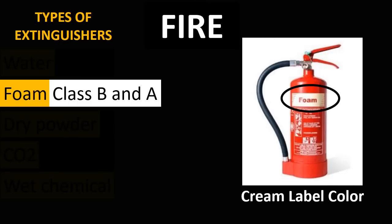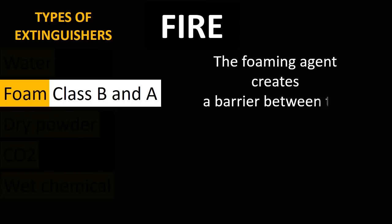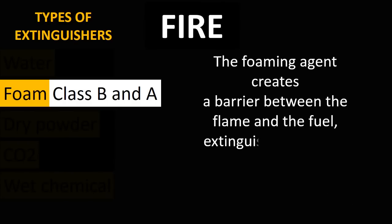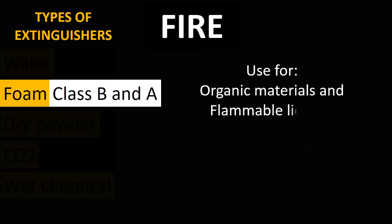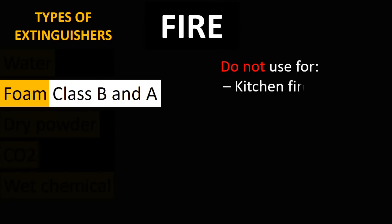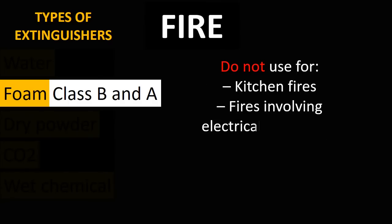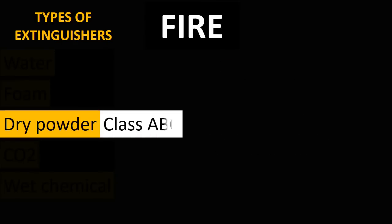The second type of fire extinguisher is foam type. Foam type is used on Class B and Class A fires and they have a cream label color. The foaming agent creates a barrier between the flame and the fuel, thus extinguishing the fire. This type is used for organic materials and flammable liquids like paint and petrol. Do not use foam type fire extinguishers for kitchen fires, fires involving electrical equipment, or on flammable metals.